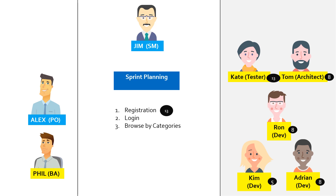In our story, once Alex and Phil completed the walkthrough for registration, the team started estimating. The estimates provided varied from 5 to 13. The team discussed among themselves and came to a common agreement on story points. Kate informed that there are many devices on which she needs to test, and hence they agreed to go with her estimate.